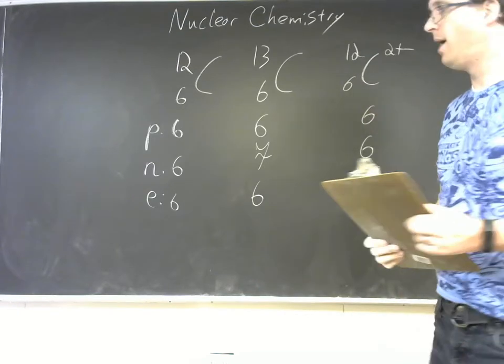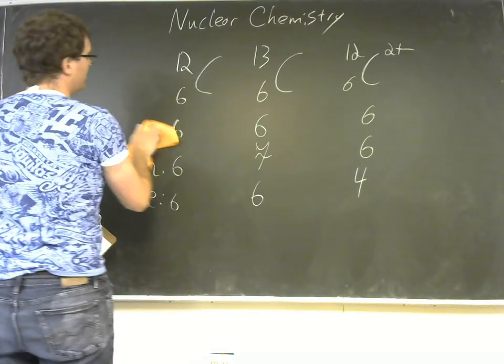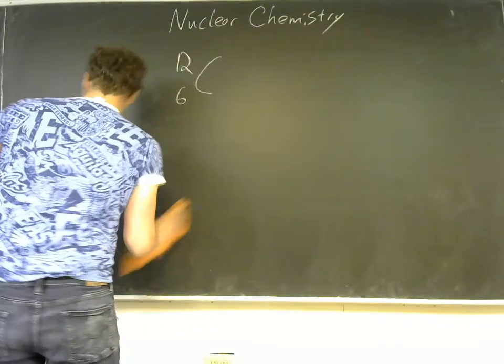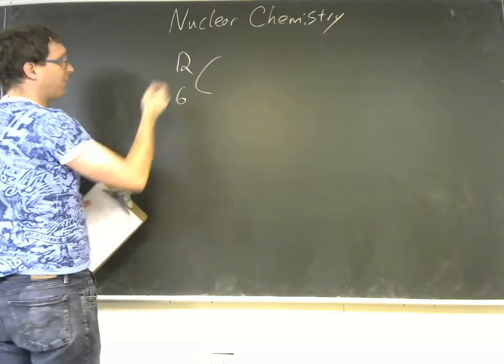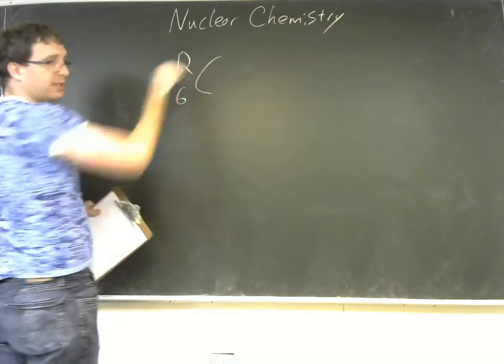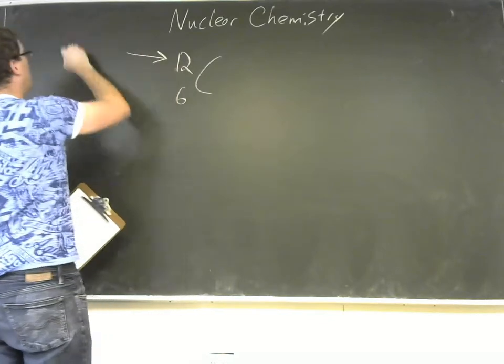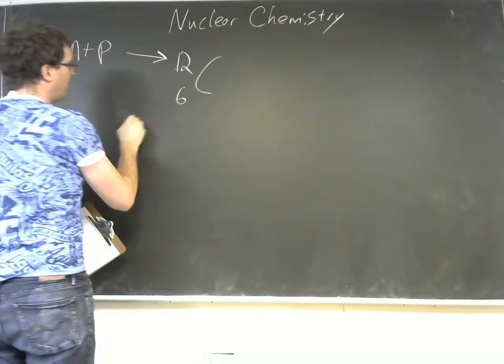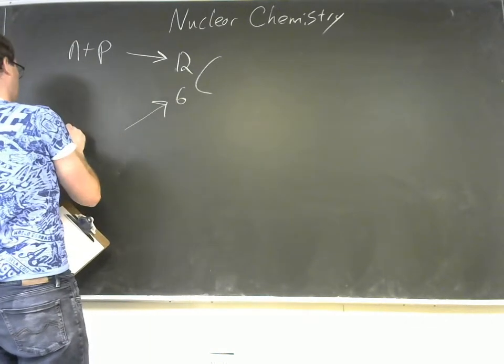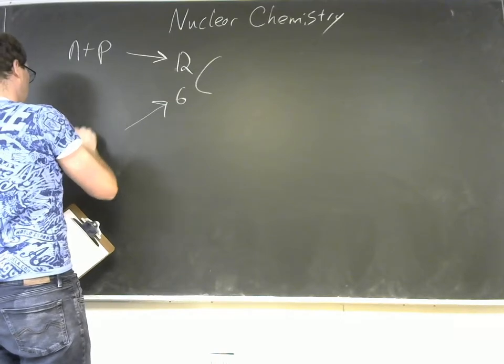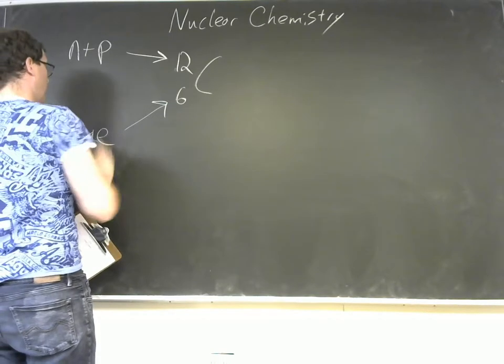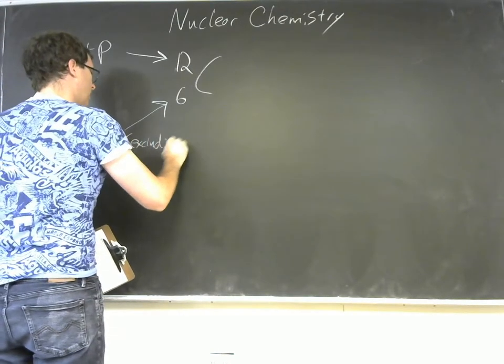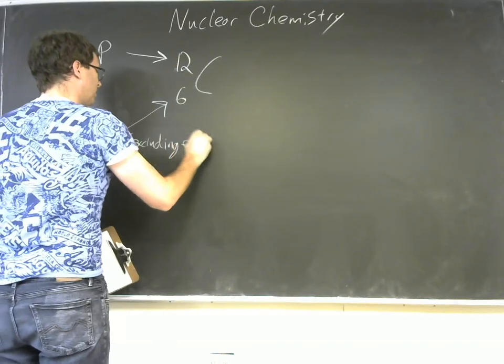Now we're going to take this idea of the atomic symbol and we're going to change it a little bit. But in particular, for nuclear chemistry, this will still be the mass number. And so this will still be n plus p.